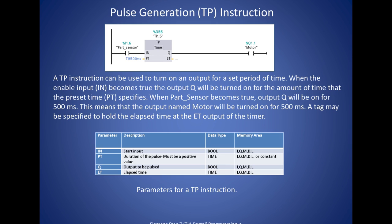The final timer that we'll examine is the pulse generation. This keeps the output on for a fixed amount of time. Whenever the input is on, then the output is immediately set to be true and the timer begins to increase. Elapsed time increases. And once elapsed time equals the preset time, then the output goes off. And that is the operation regardless of what happens with the input.